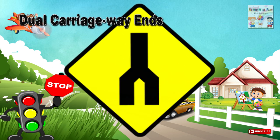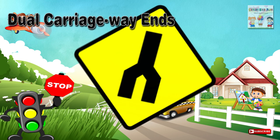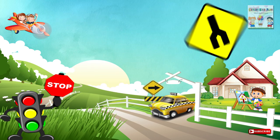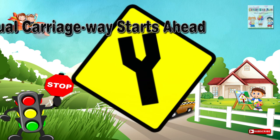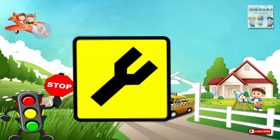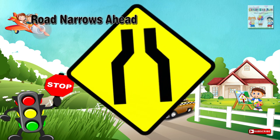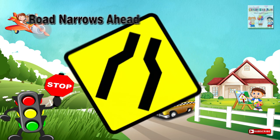Seven: Dual carriageway ends — end of a dual carriageway of a road ahead. Eight: Dual carriageway starts ahead — a place ahead where the dual carriageway of a road starts. Nine: Road narrows ahead — a place ahead where the road narrows on both sides.